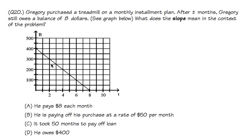Number 20, we are once again given the graph, and here's the story. Gregory purchased a treadmill on a monthly installment plan. After 10 months, he still owes a balance of B dollars. Notice that the B dollars is on the y-axis, and on the T-axis, this is the number of months.